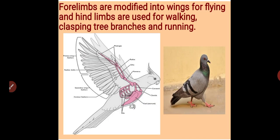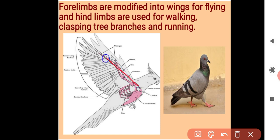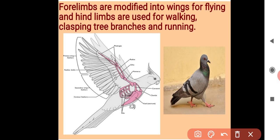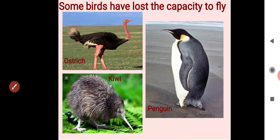Let's study some features of Aves. The four limbs are modified into wings for flying. It shows the primary wing feathers and secondary wing feathers, which are used for flying — this is a special character in birds. The hind limbs are used for walking, and also used for clasping branches. Clasping means to hold the branch. Some birds are also used for running.